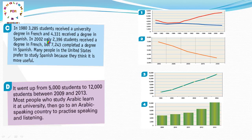In 2002، only 2,396 students received a degree in French. فقط 2396 تحصلوا على درجة جامعية في اللغة الفرنسية. But 7,243 completed a degree in Spanish. إذن paragraph C هذا يحكي على graph number 1.